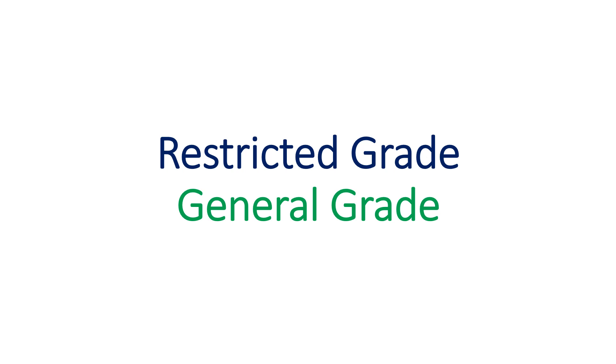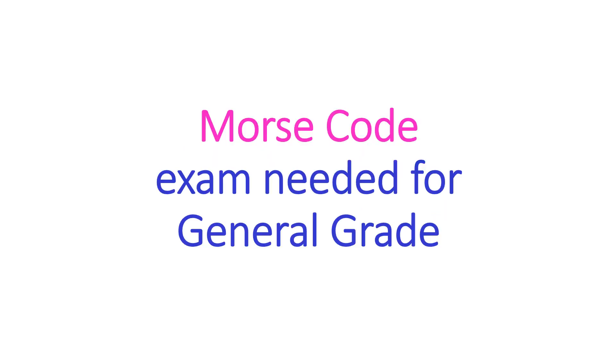There are two grades of licenses: restricted and general. Examinations are conducted at any of the wireless monitoring stations or international monitoring stations. The examination has two parts: Part A is basic electronics and Part B is radio regulations. The restricted grade examination is for 1 hour and has 25 questions each, while general grade examinations have 50 questions each and are for 2 hours. In addition, general grade candidates have to undertake an examination in transmission and reception of Morse code.